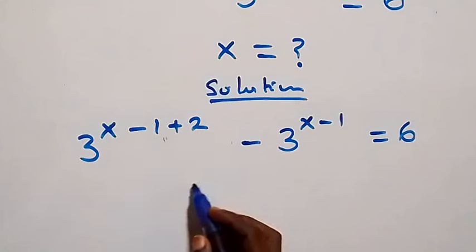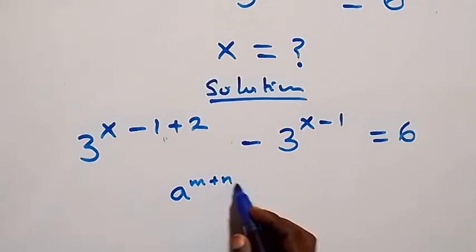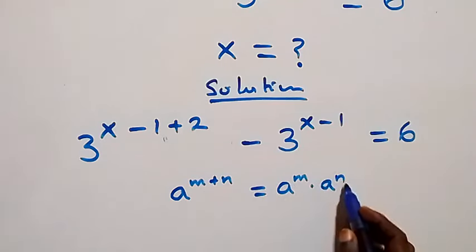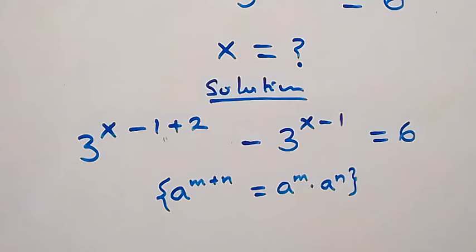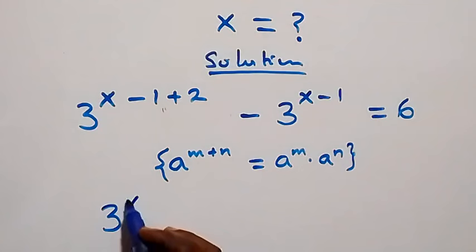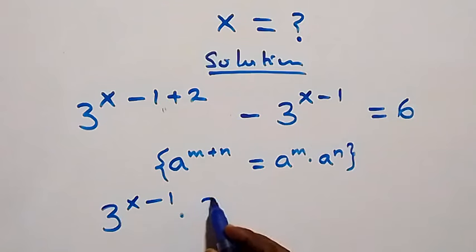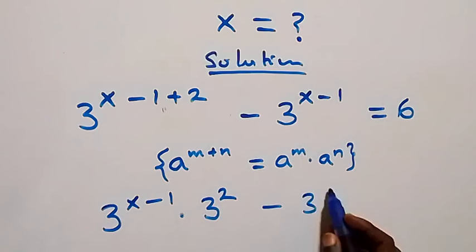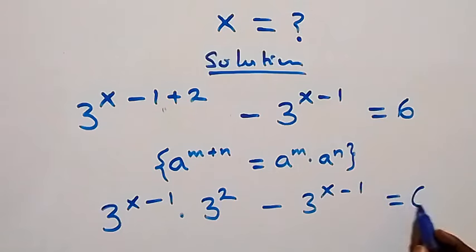Let's separate this using the law of indices: A raised to power m plus n equals A raised to power m times A raised to power n. So we separate x minus 1 and we have 3 raised to power x minus 1 times 3 raised to power 2, then minus 3 raised to power x minus 1 equals to 6.